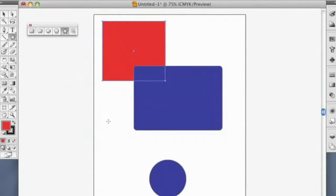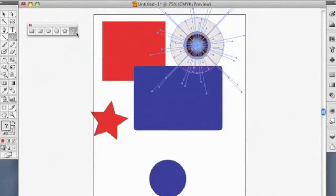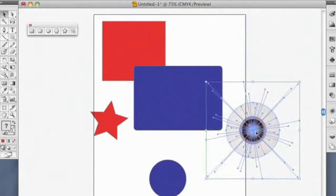A couple other shape tools. We have the star tool. We can drag and make stars. And we have one of my favorites, the starburst tool. This kind of makes a lens flare. Some people call it a flare, a lens flare, starburst, all kind of the same thing.